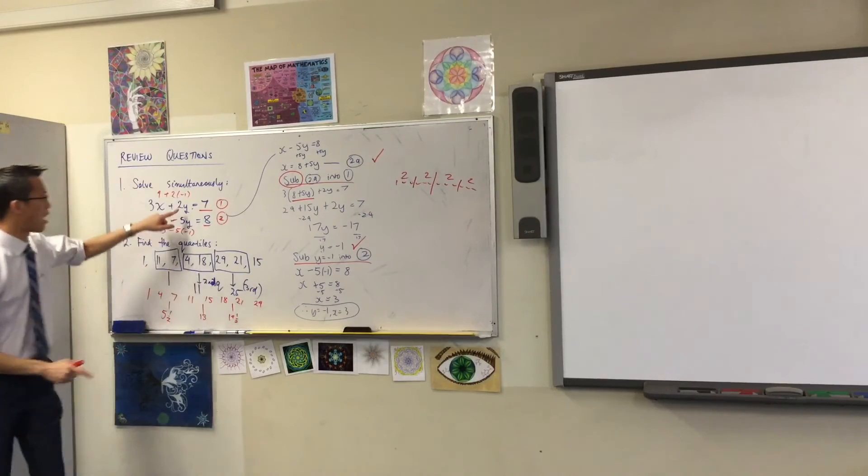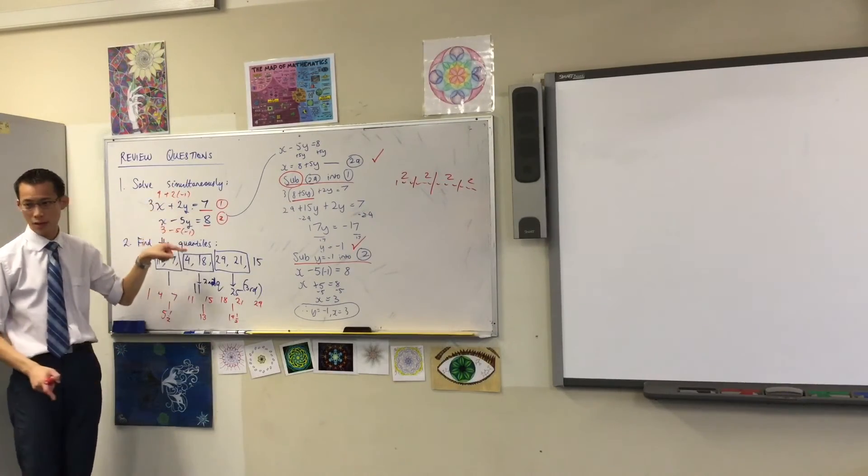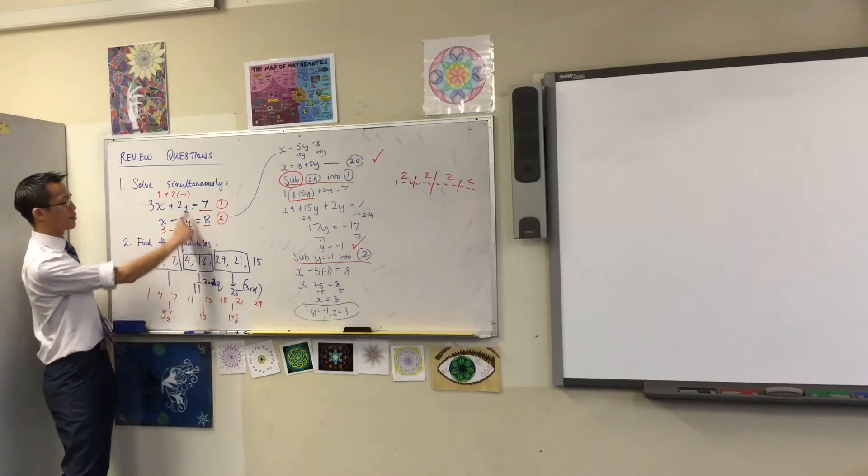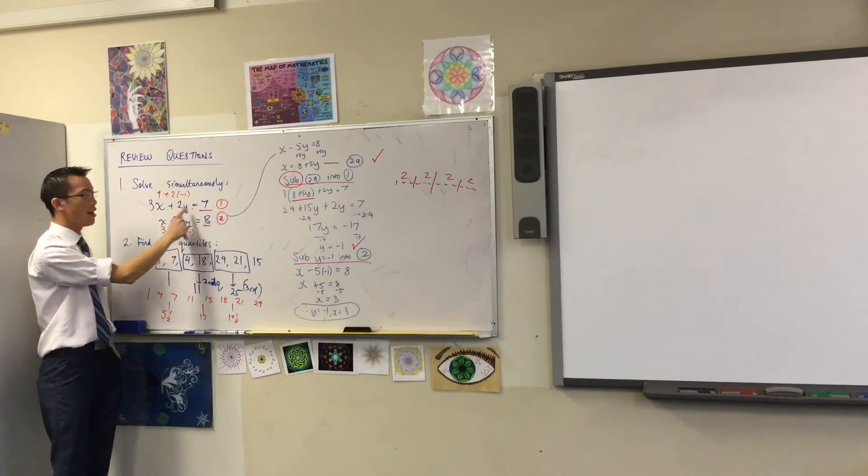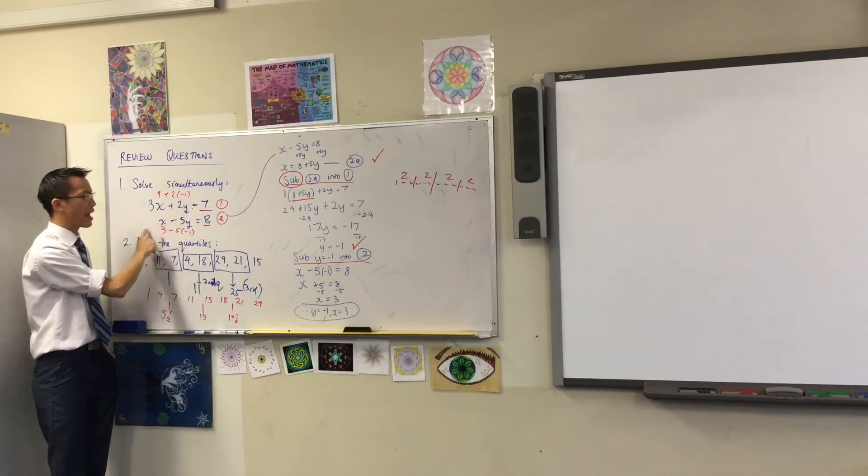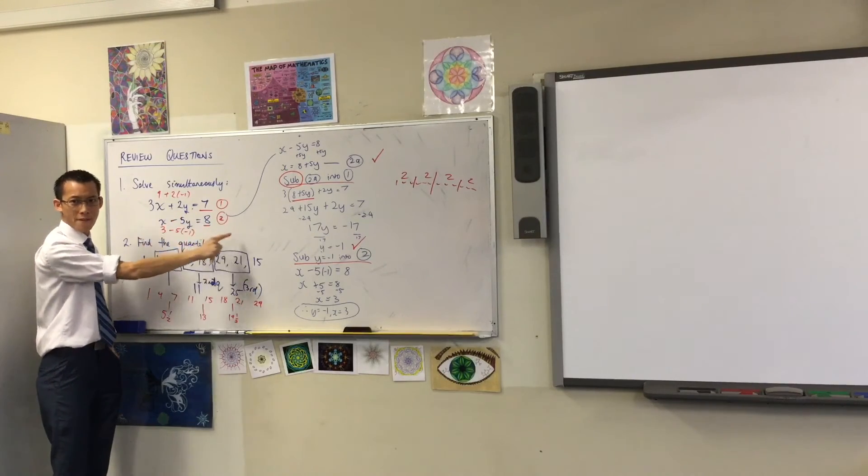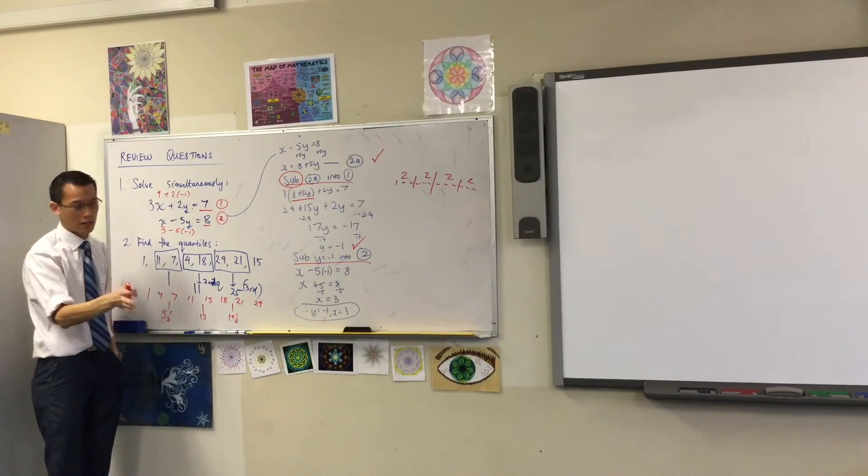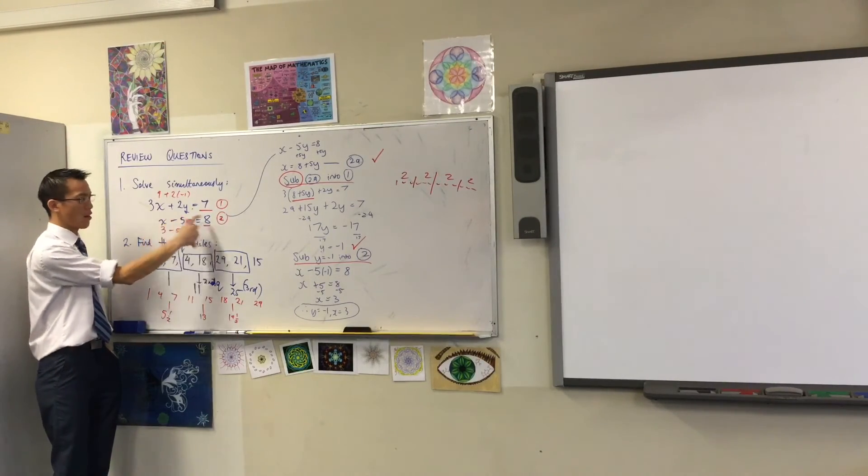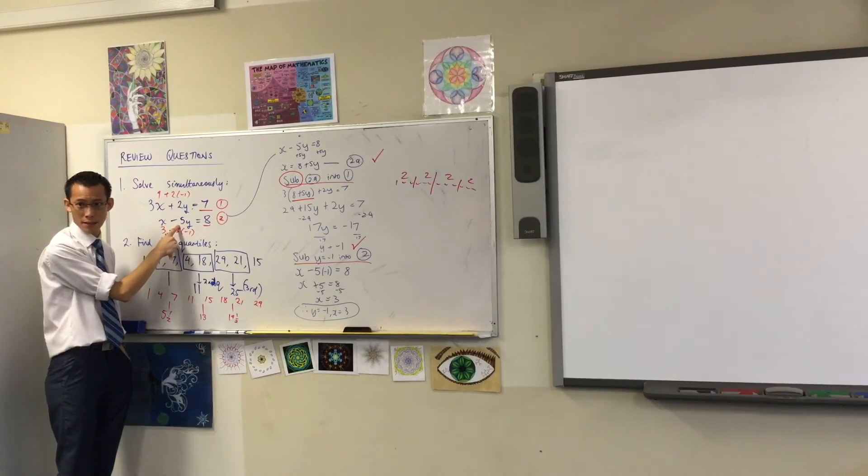I'm either going to get rid of the x's or I'm going to get rid of the y's. Now, in order to do that, I need the same number of x's in both equations or the same number of y's in both equations. Either one is fine, just you've got to choose. Now, if I want the same number of y's, have a look. See how there's 2 here and there's 5 here? What I'd have to do is I'd have to multiply this equation by 5, whatever, whatever, there will be 10y. Then I'd have to multiply this equation, not by 5, but by 2. I could do minus 2, but I don't need to, because that would be whatever, whatever, minus 10y.